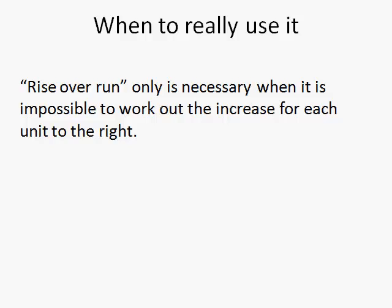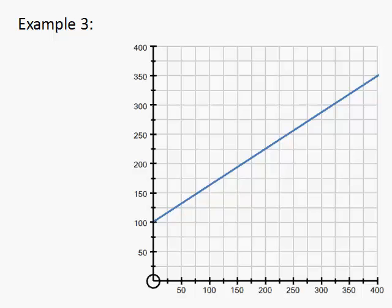The real use for rise over run is when it's impossible to work out 1 to the right, not like the ones above but in cases like this. Here we can't work out what the rise is for every 1 across because the graph is too large and we can't see the tiny fractions. So in this case we have to use a much bigger triangle.